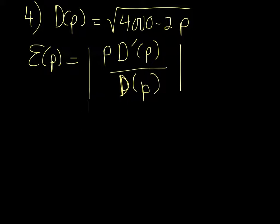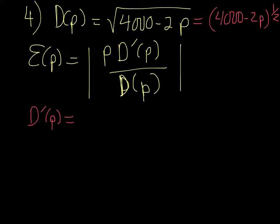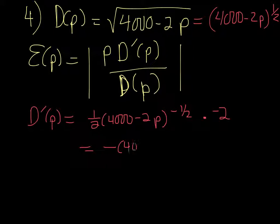So we need to find all sorts of things here. Let's start with the derivative. A better way to write this equation would be (4000 - 2p)^(1/2). It's better because it'll make it easier to find the derivative. So it's going to be 1/2 times (4000 - 2p)^(-1/2) times -2.